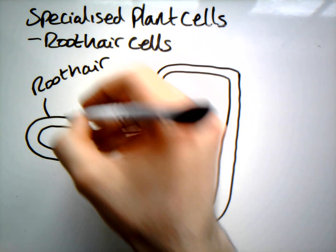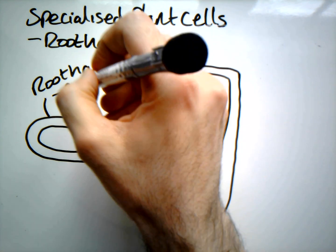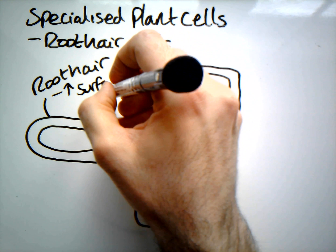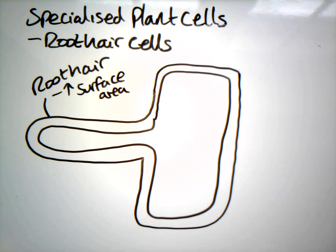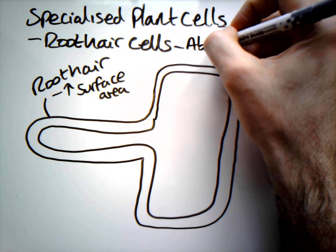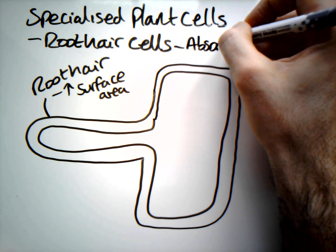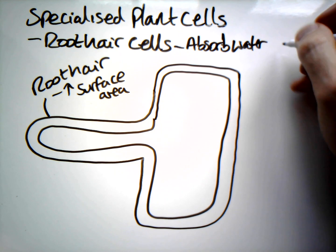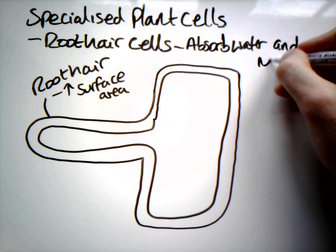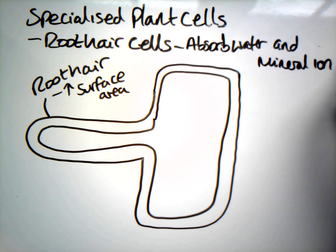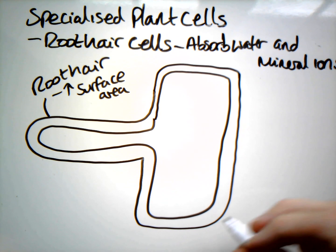The main function of this root hair is to increase surface area. That's because our root hair cell's predominant job is to absorb water and mineral ions from the soil and the surrounding area.